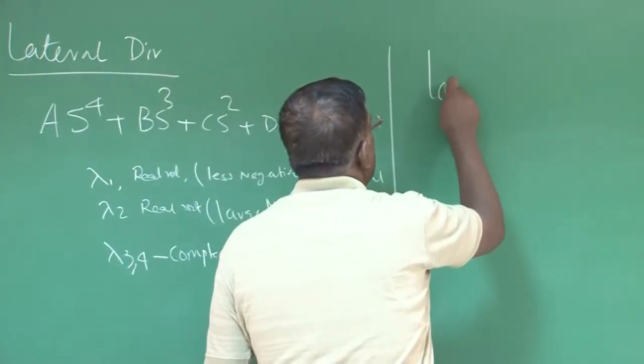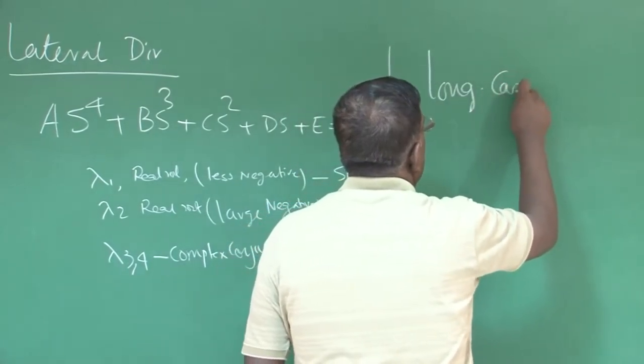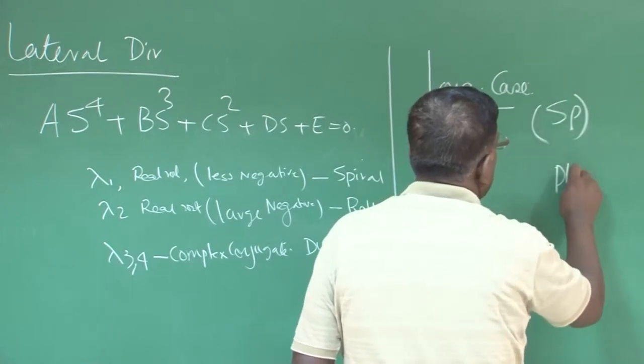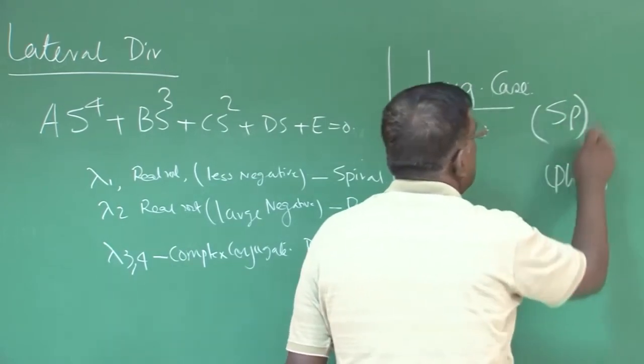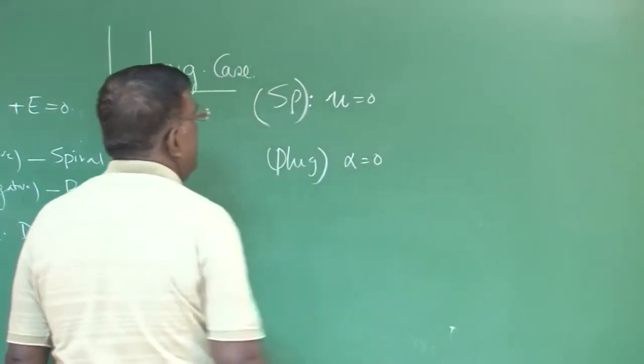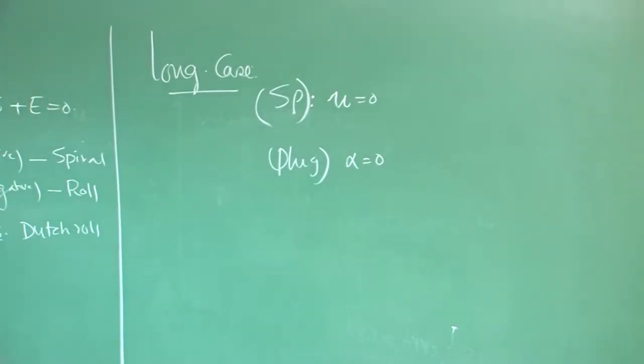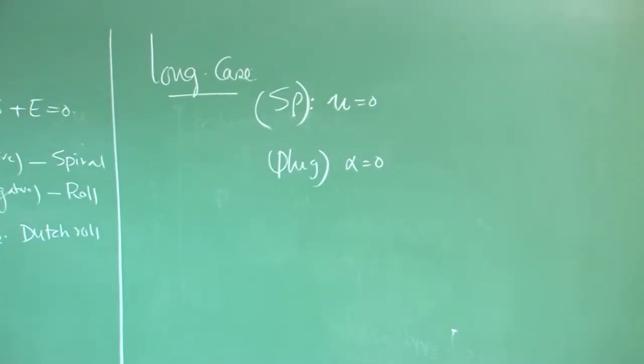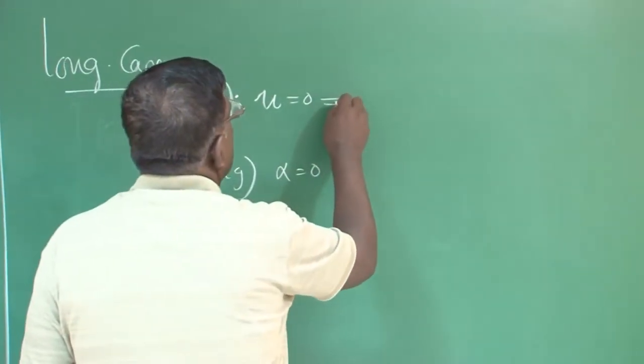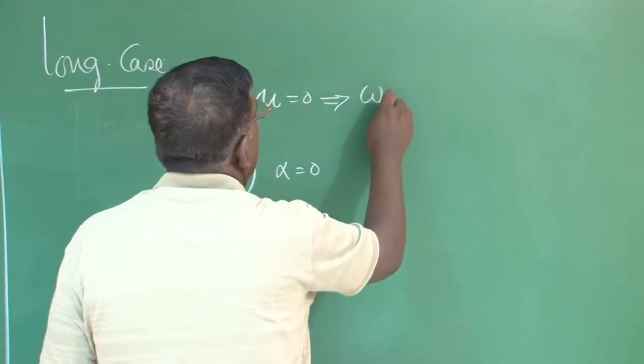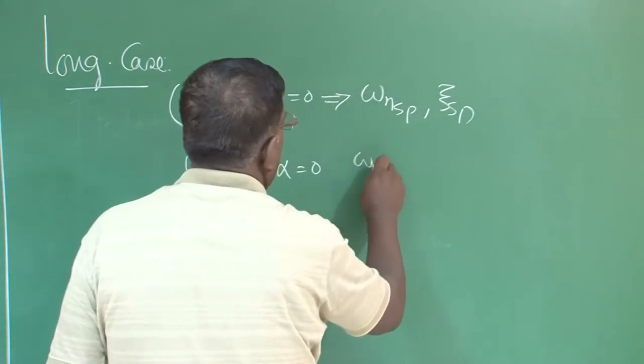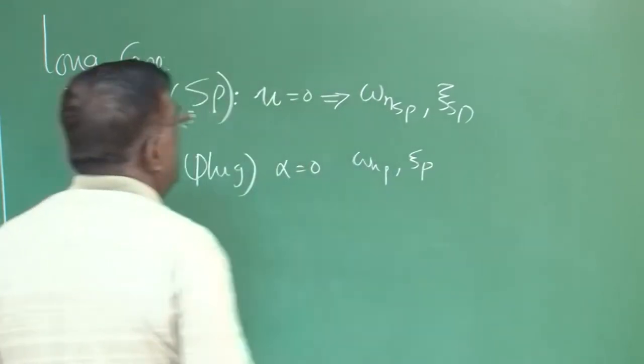So if you ask him to start using this chaotic equation, it will be very difficult. He does not have the numbers. He said, let us do some approximation and then we did in longitudinal case, we did some approximation, short period approximation and phugoid approximation. In short period approximation, we said, we have been telling phugoid approximation is not very correct approximation.